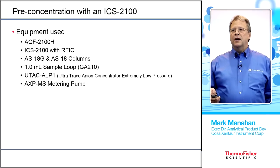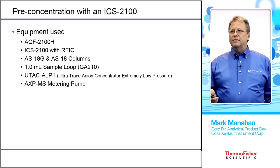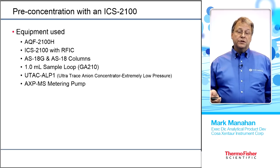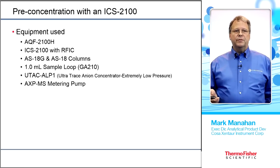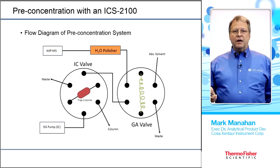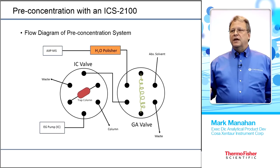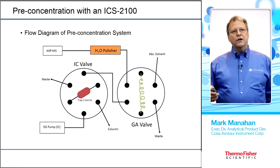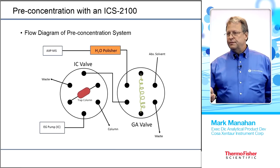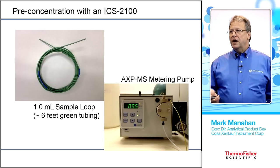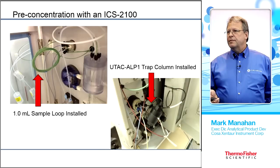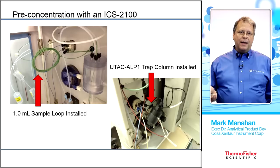Pre-concentration data was generated using an AQF-2100H with an ICS-2100 using reagent-free IC, an AS18 column and guard column, a 1-milliliter sample loop, an ALP-1 pump, an AXP-MS metering pump, and a trap column. In the flow diagram for pre-concentration, one injection loop takes the sample from the absorption tube and fills the 1-ml loop, and the injection loop on the ICS-2100 pushes that 1-ml loop onto the trap column. When the valve fires, the eluent counter-flows onto the separation column.